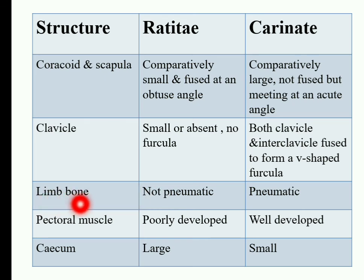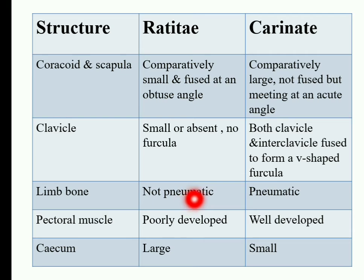Next are limb bones, meaning leg bones. In Ratites birds, the leg bones are not pneumatic, meaning the bones are porous. In Carinates birds, the leg bones are pneumatic, meaning they are air-filled, which decreases body weight and allows the bird to fly easily.